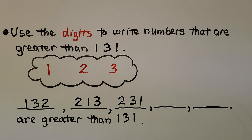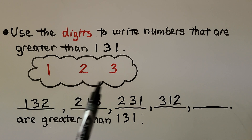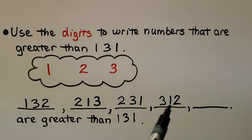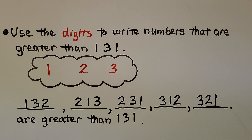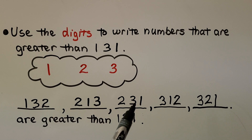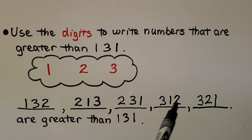We can put the 3 in the hundreds place. We can use these digits and write 312. We could also trade the tens and ones to create more numbers. We could change the tens and ones to make 231, which is greater than 131 using the three digits. We could also swap tens and ones from 312 to make 321, which is also greater than 131.